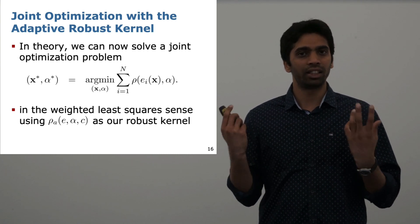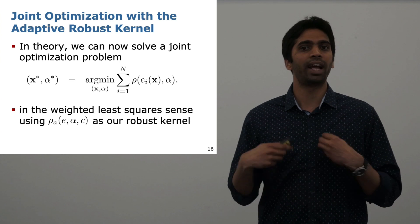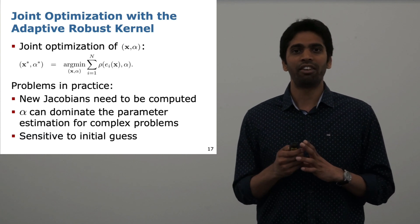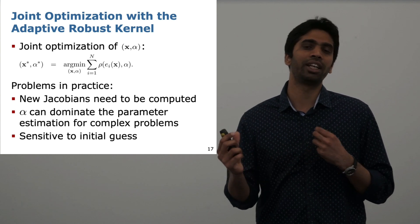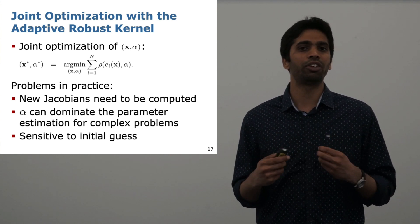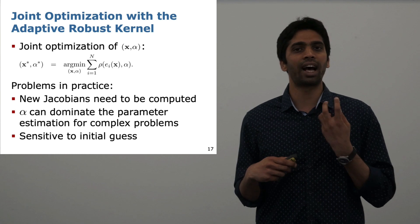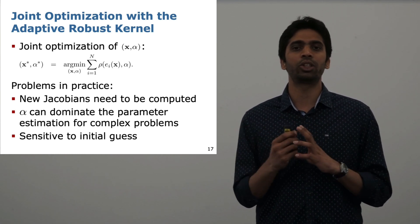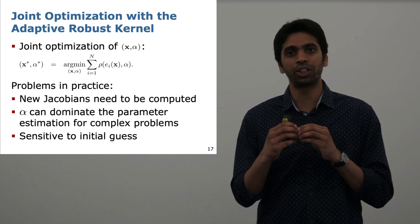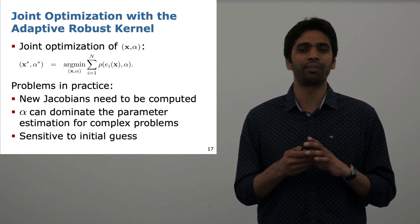This can be used as a weighted least squares problem and solved as usual. However, this means that our Jacobians need to be changed as now alpha is one of the unknowns. We have observed in our experiments that this alpha is quite sensitive and therefore can take away the solution from the actual parameters that are there.